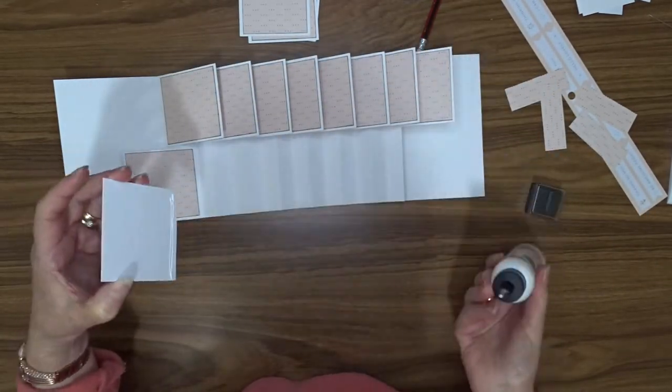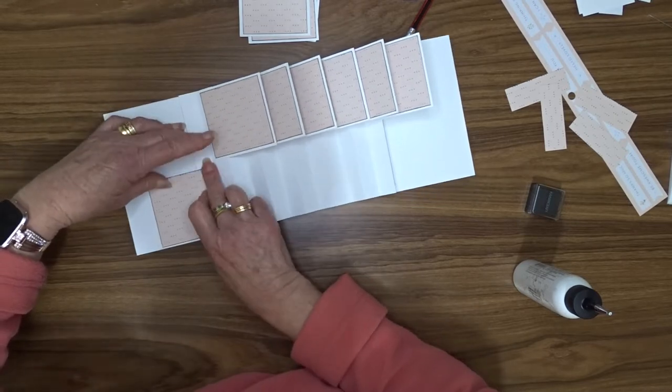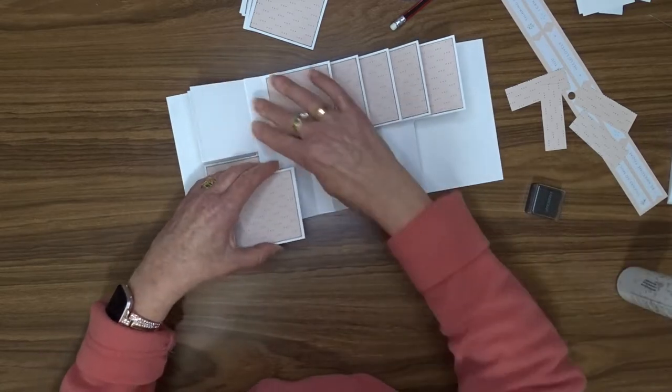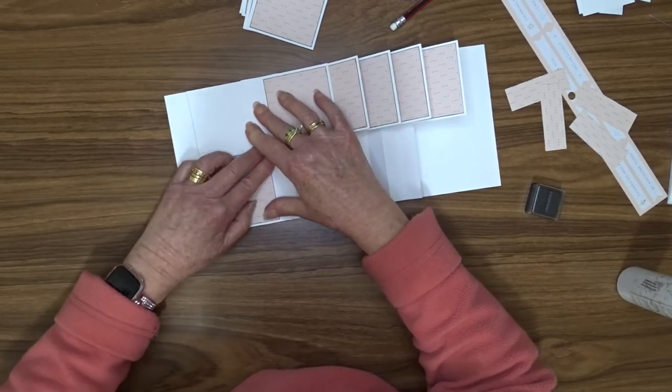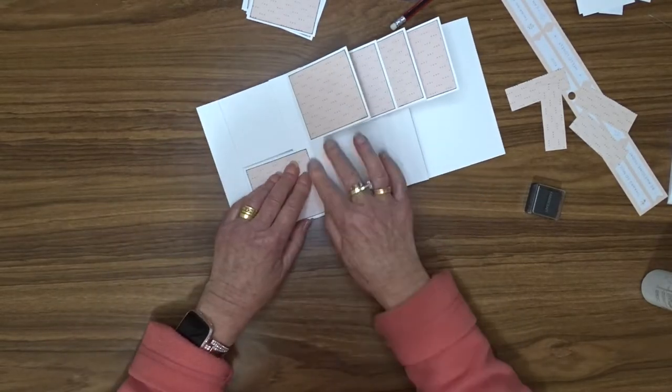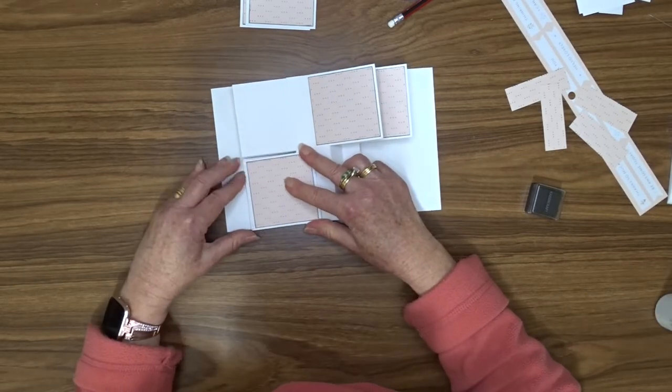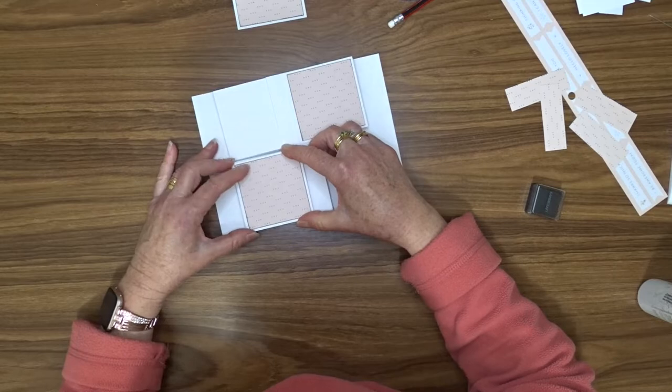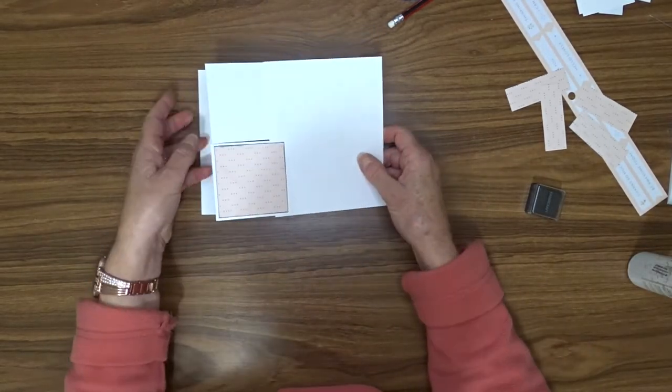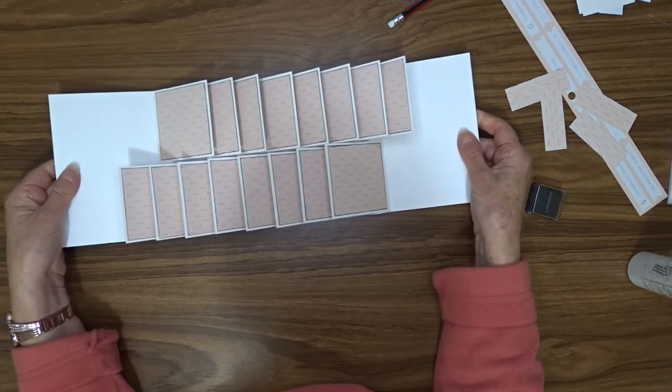I used the same technique to attach them. So I lined them up on top of each other as I went along to make sure that they sat nicely in the card. So now we've got all of our squares attached to the top and the bottom, and when we open our card, you can see that the squares go in opposite directions.